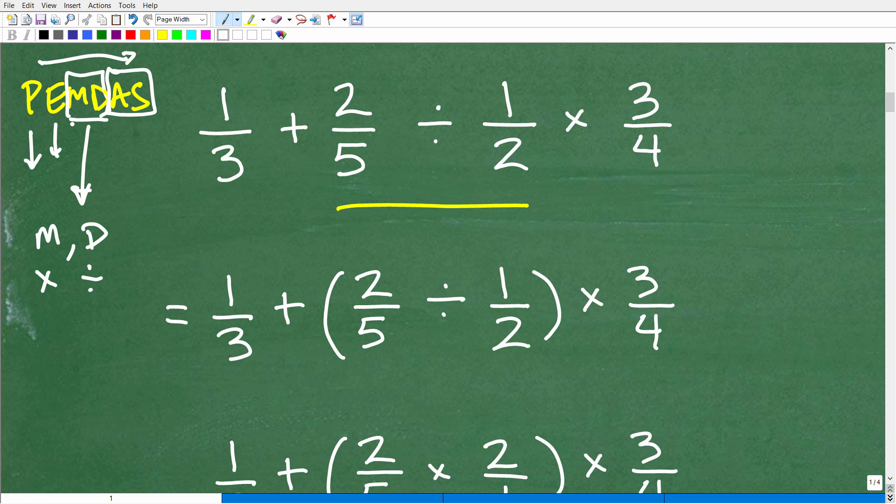So PEMDAS can, if you think about it, we can actually even write this acronym this way. We're always going to do parentheses and powers. That's always the case. But this M and D could be D, M, if you have division before multiplication. And same thing with addition and subtraction. Sometimes if subtraction comes first from left to right before addition, we can write it this way.